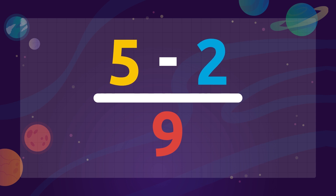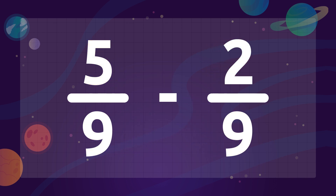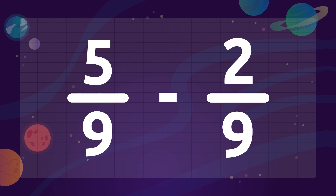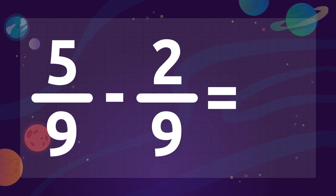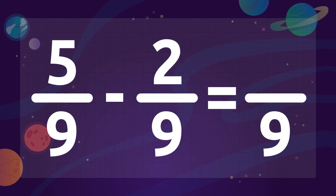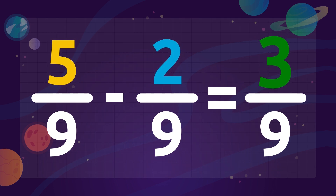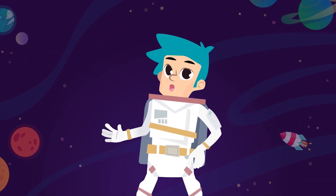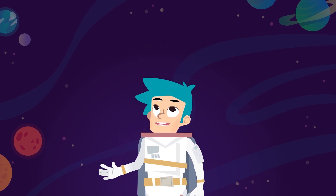It's very simple! Let's see an example. We need to solve: five ninths minus two ninths. The denominator stays the same — in this case, the number 9. Now we subtract the numerators: 5 minus 2 equals 3, which will be the numerator in the answer. The result of this math problem is three ninths. Are you up for a challenge to practice a bit more?